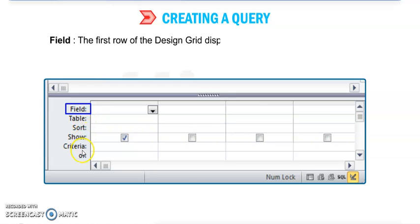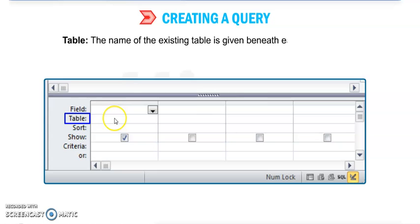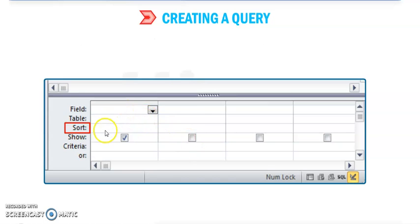There are some points: Field, Table, Sort, Show, Criteria, or OR. Now the first option is Field. The first row of the design grid displays the selected field names from the table. Next is Table. The name of the existing table is given beneath each field name.